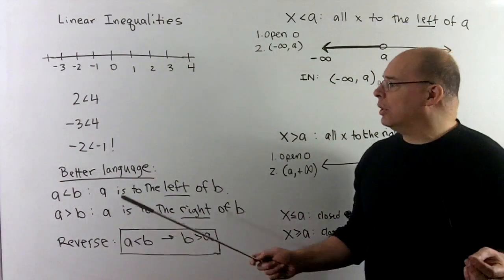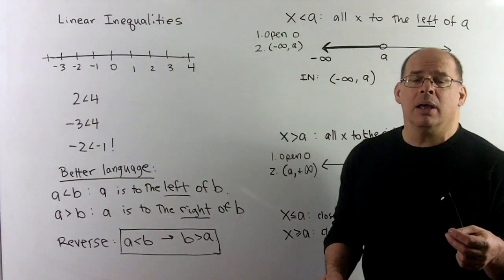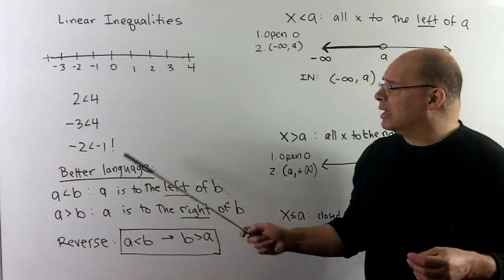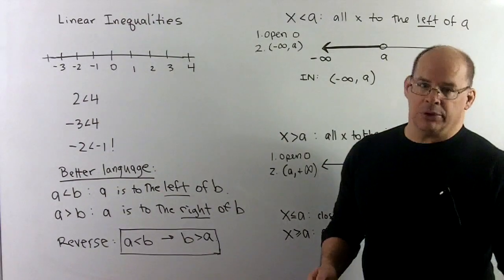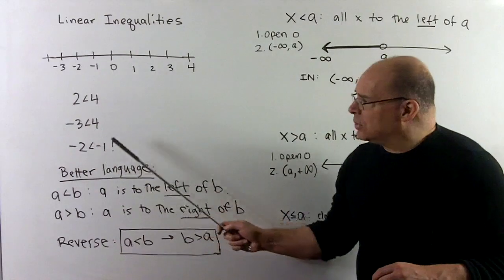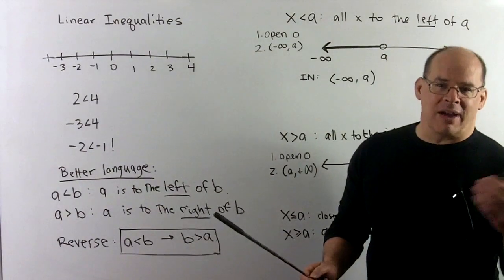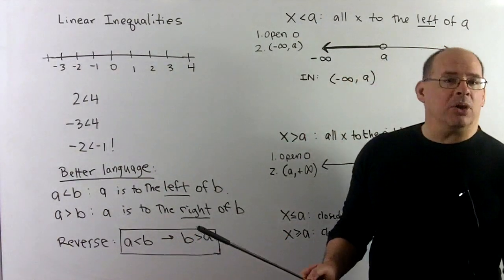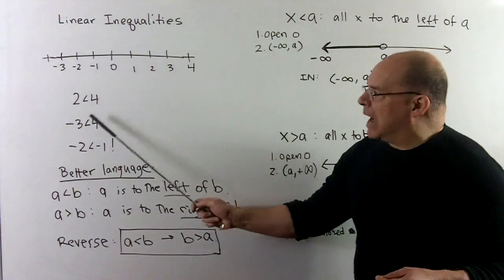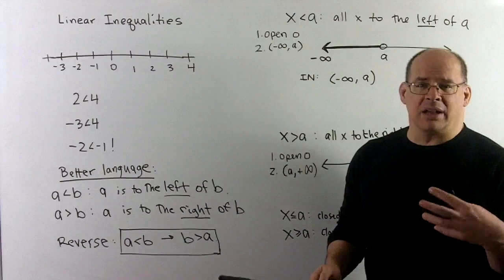Where confusion comes in: if we compare minus 2 and minus 1, the quick instinct is to say minus 2 is bigger than minus 1 because 2 is bigger than 1 — but that doesn't work. If I owe $200 compared to owing $100, you have more if you owe $100. A better way to think of this is in terms of position on the real number line. Instead of greater than or less than, talk about left and right. If a is less than b, then a is to the left of b. Check: 2 is to the left of 4, minus 3 is to the left of 4, minus 2 is to the left of minus 1. That straightens things out.